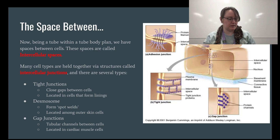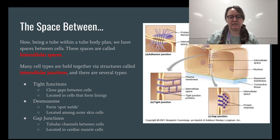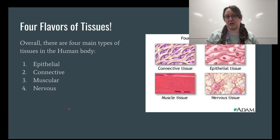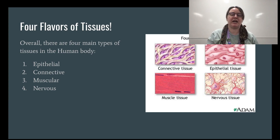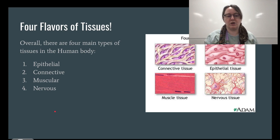Those are the three types of junctions your book talks about — that's basically how cells stay stuck together. Overall, there are four main types of tissues in the human body: epithelial, connective, muscular, and nervous. These are the four major categories we generally split everything in your body into.